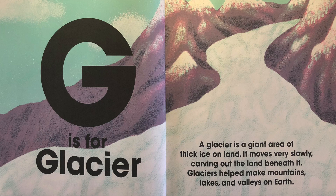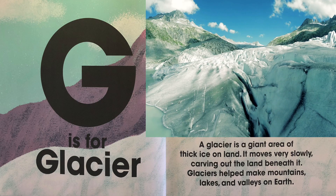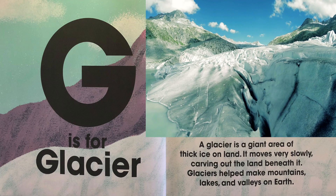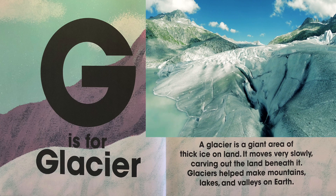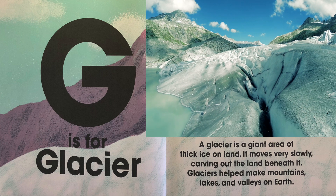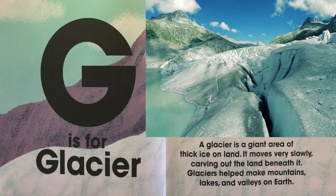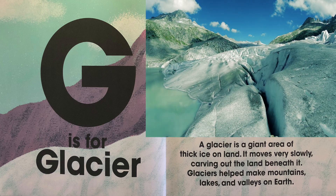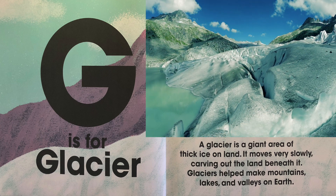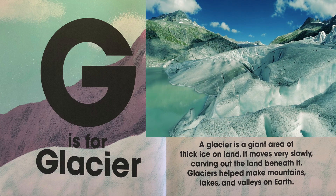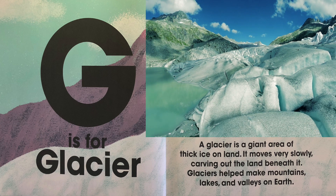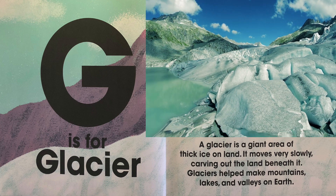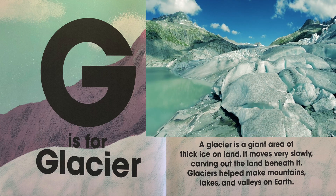G is for glacier. A glacier is a giant area of thick ice on land. It moves very slowly, carving out the land beneath it. Glaciers help make mountains, lakes and valleys on earth.